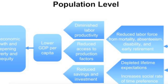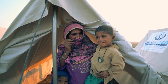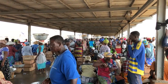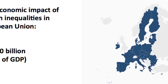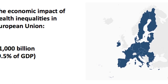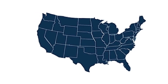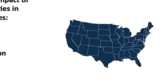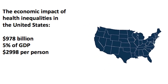There are major consequences to health care disparities and worse health outcomes, including diminished labor productivity, access to production factors, reduced savings and investment, and lower GDP per capita. The economic impact of health disparities in the European Union is 9.5% of GDP. In the United States, the economic impact of health care disparities equals $975 billion a year, which equals 5% of GDP.